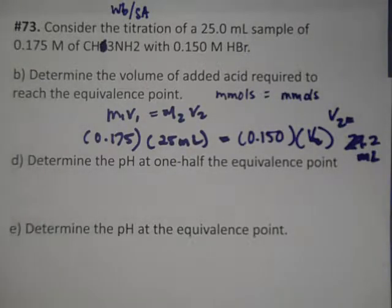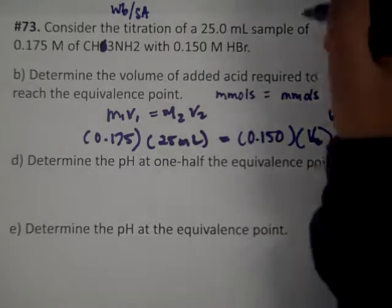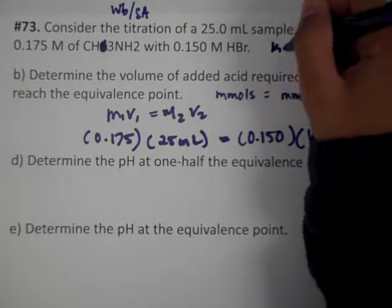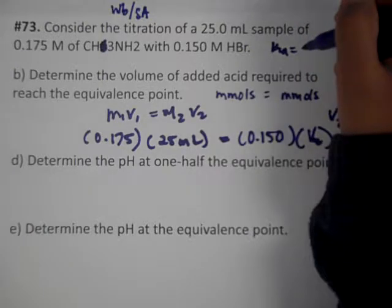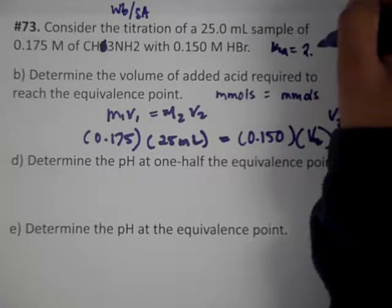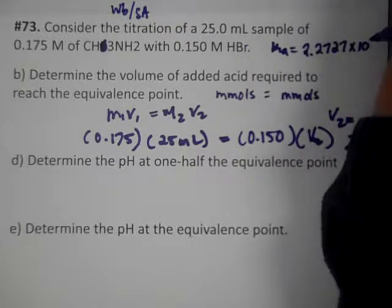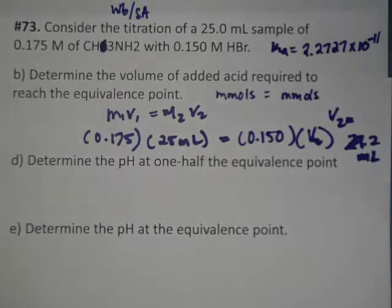The Ka value given is 2.27 × 10⁻¹¹. So at half the equivalence point, pH equals pKa.